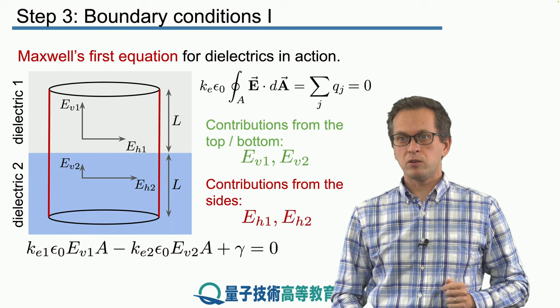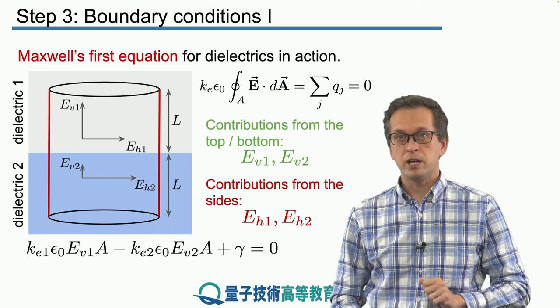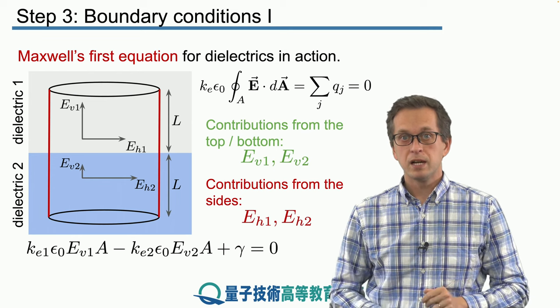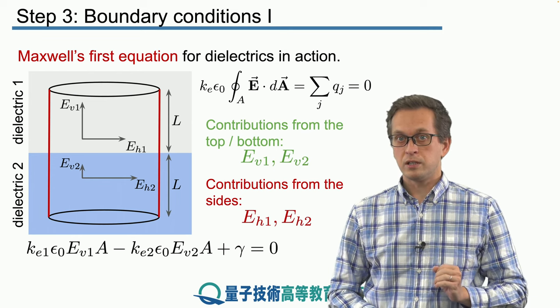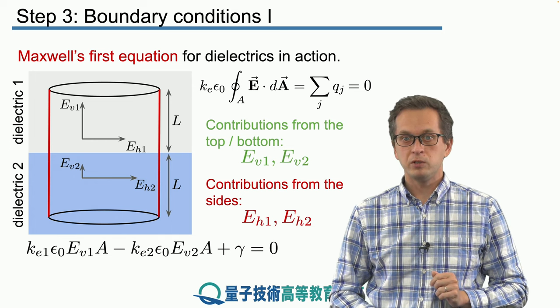Now why did I not explicitly write down the contributions from eH1 and eH2 going through the sides of the cylinder? Simply because we can alter the shape of the cylinder and get rid of gamma. How do we do it?